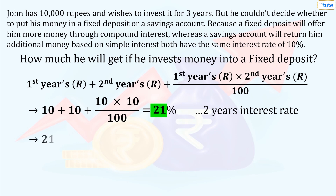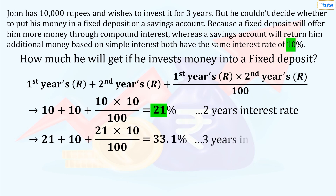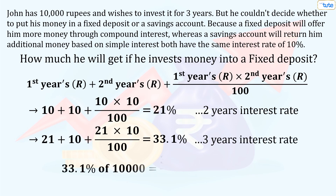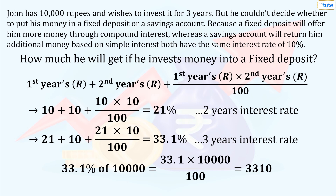Now to find the third year interest rate, we will add the previous 21% and the interest rate of the third year, which is 10%, and again add the product of these rates divided by 100. Solving this, we get 33.1%. So we will find 33.1% of 10,000, which is 3,310. John will get an additional 3,310 rupees after 3 years if deposited in FD, which is more than the simple interest.